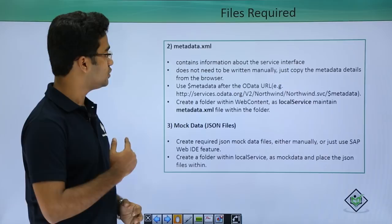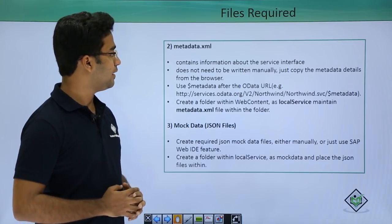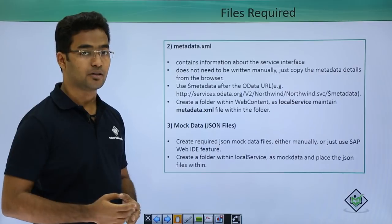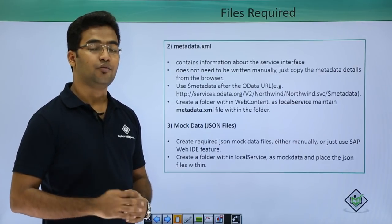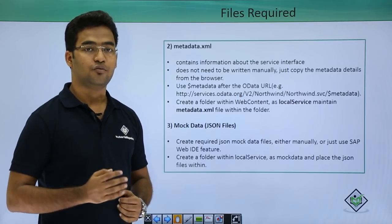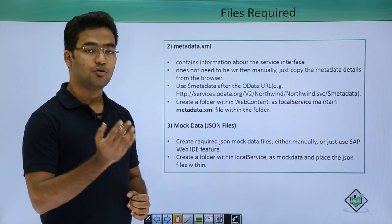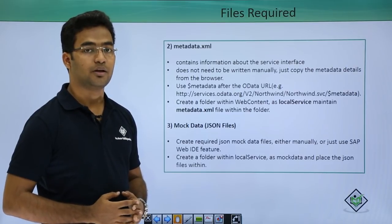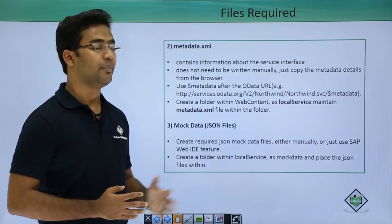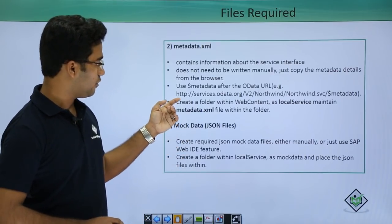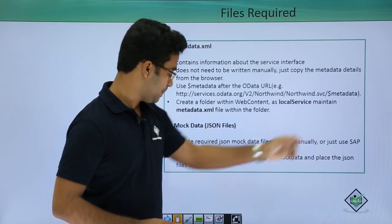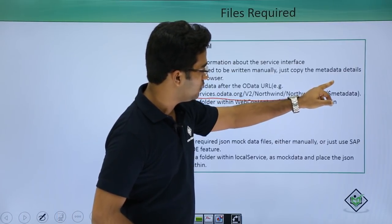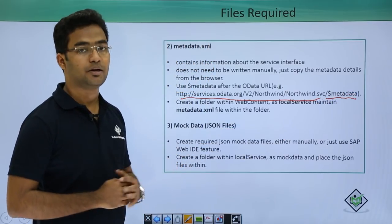The second file is metadata dot xml. It contains information about the service interface itself. We do not need to write anything manually into the metadata dot xml file. We have this OData service URL and at the end we just place $metadata, so all the metadata of the particular OData service appears there. We just copy it and paste it in the metadata dot xml file. For example, this is our OData URL and we place $metadata at the end to get the metadata of the OData service.